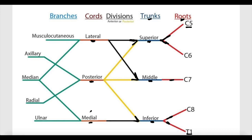On the other hand, cords are named based on their relation to the axillary artery. For example, the posterior cord is located posterior to the axillary artery, the lateral cord is located lateral to the axillary artery, and the medial cord is located medial to the axillary artery. So with this information, the names of these cords make more sense. The lateral cord is formed by the anterior divisions of the superior and the middle trunks.